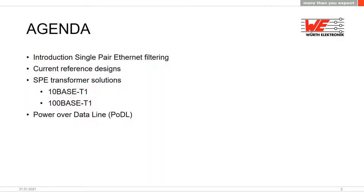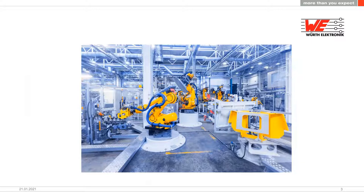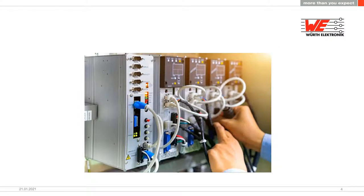When we talk about single pair Ethernet, we're not talking about the Ethernet in your office or at home. We're talking about the Ethernet in big factory halls — with different devices like robots, sensors, actuators, and cameras. In the past these devices worked separately, but now everything is combined so you can monitor from your office what a machine's camera is doing, whether a sensor is defective, or if something needs repair.